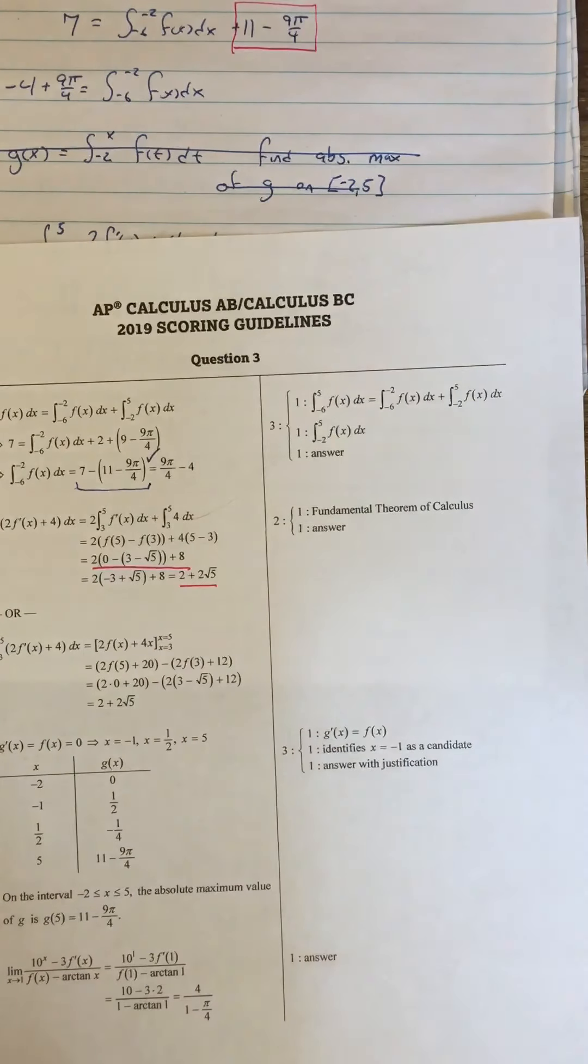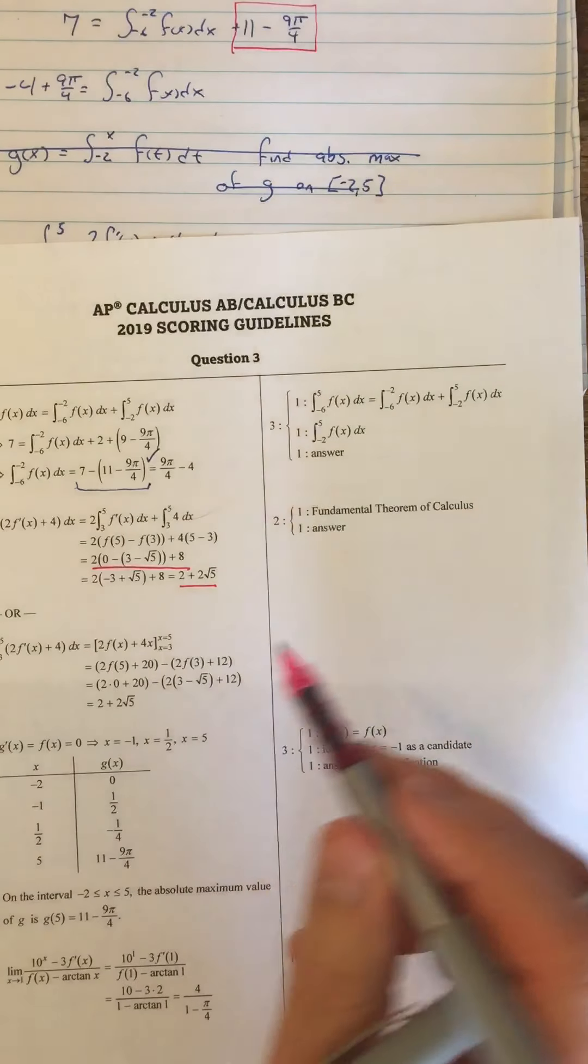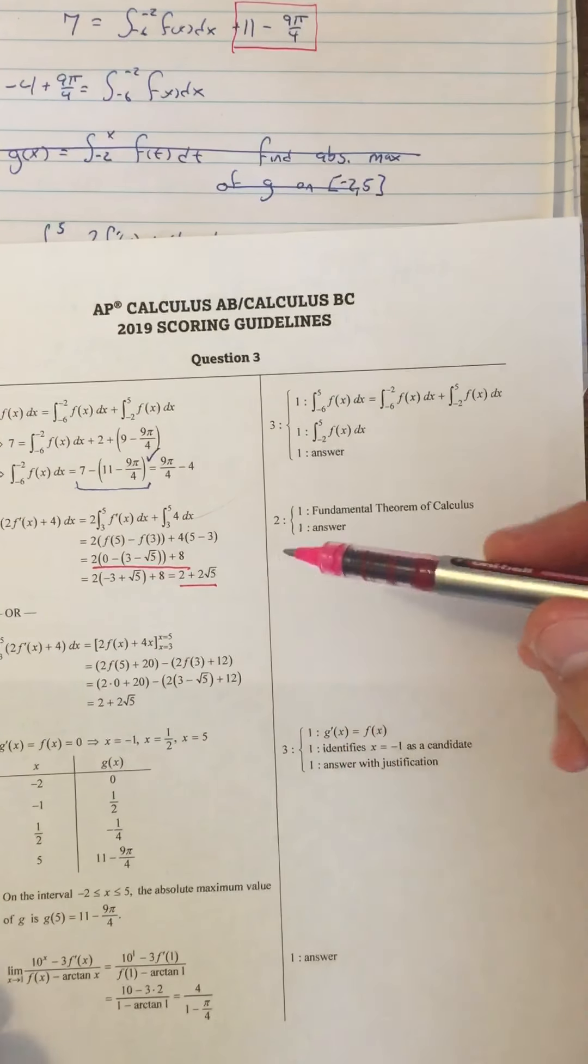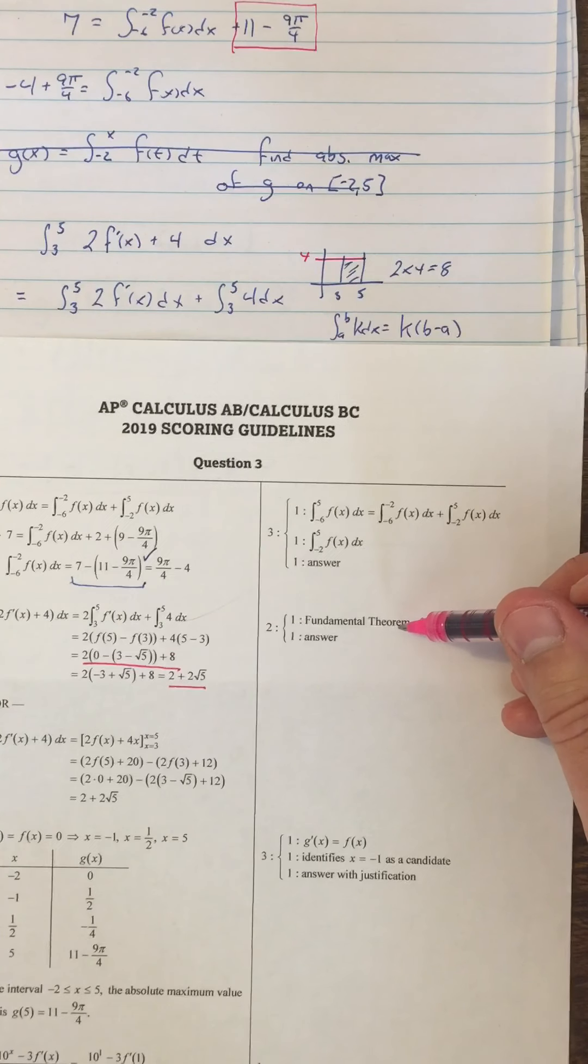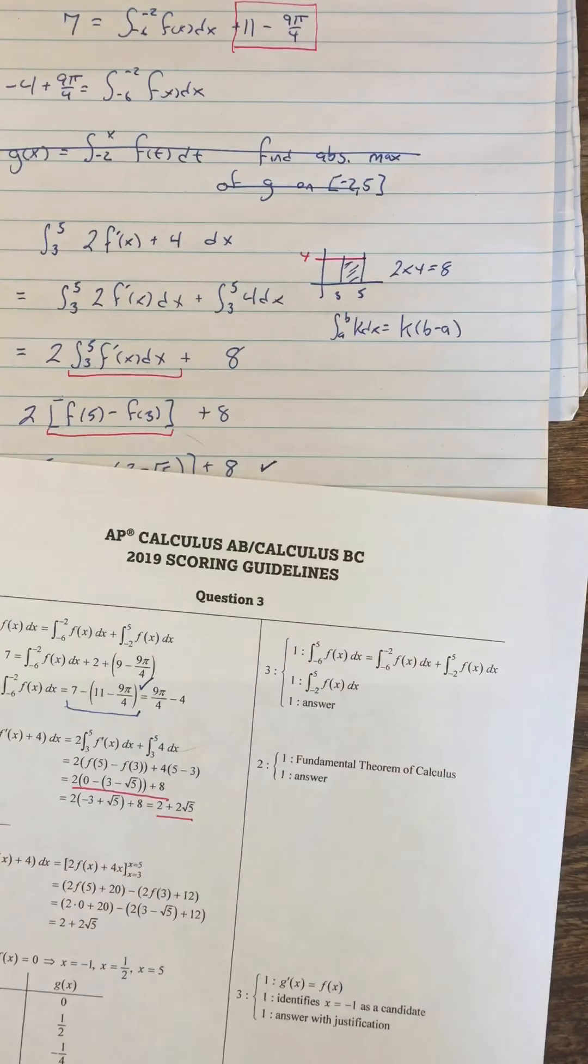But if you were curious, it simplifies to two plus two square root five. But remember, you have the potential of losing some point if you simplified it wrong. So we get just one point for fundamental theorem and one point for the answer. So that was worth two.